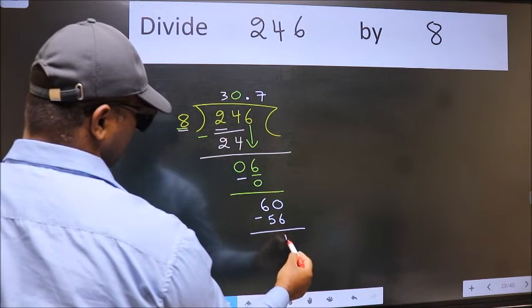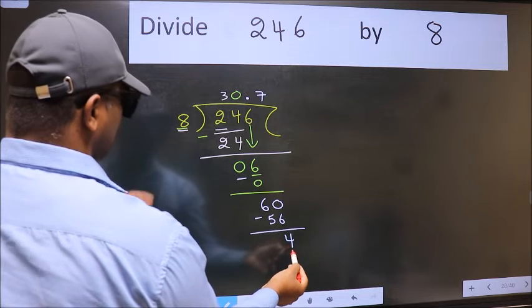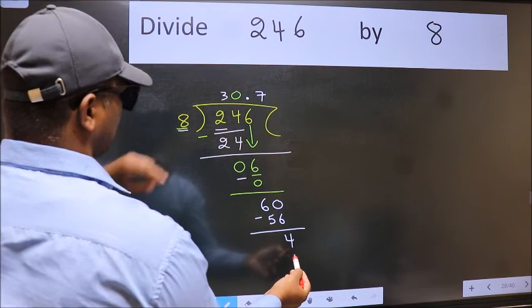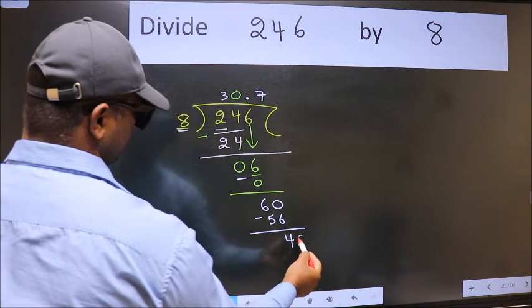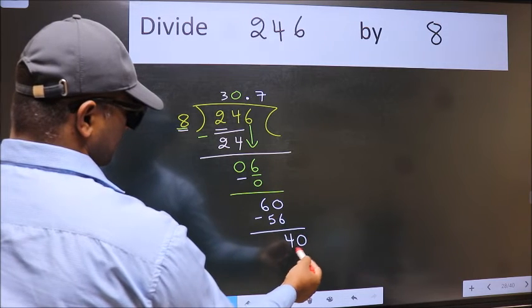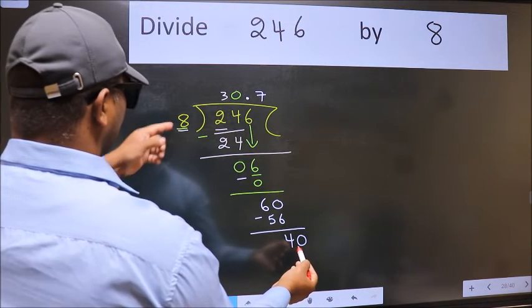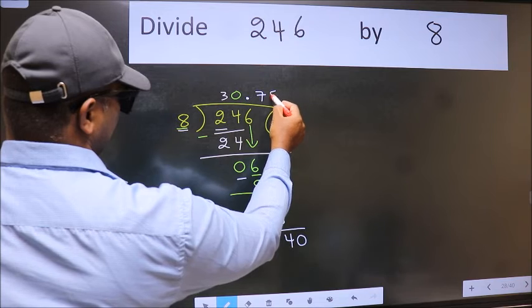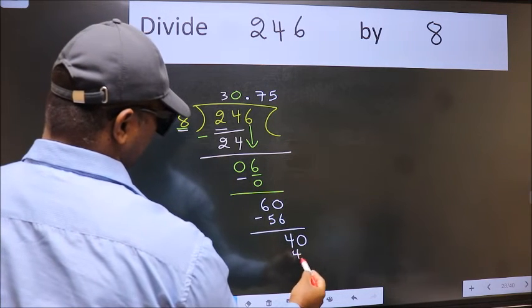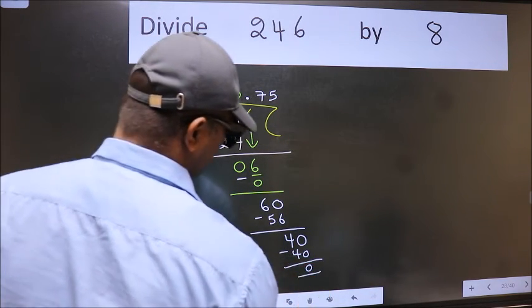Now we subtract. We get 4. 4 is smaller than 8, and we already have the decimal, so directly take 0, so 40. When do we get 40 in the 8 table? 8 times 5 is 40. Now we subtract. We get 0.